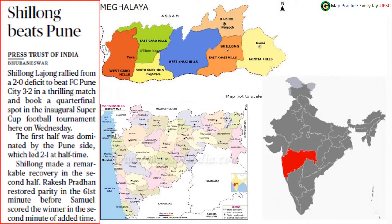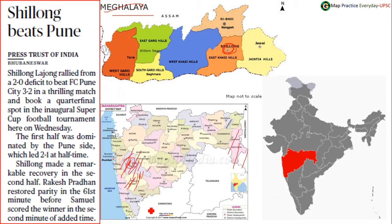Shillong and Pune are in the news. In Meghalaya, Shillong is located in the Eastern Khasi Hills district. Pune in Maharashtra is located here. Yesterday we saw Sindhudurg and today we have Pune. Gadchiroli was covered, Satara district where Krishna River originates was covered, Sangli was also seen, and now Pune is in today's news.